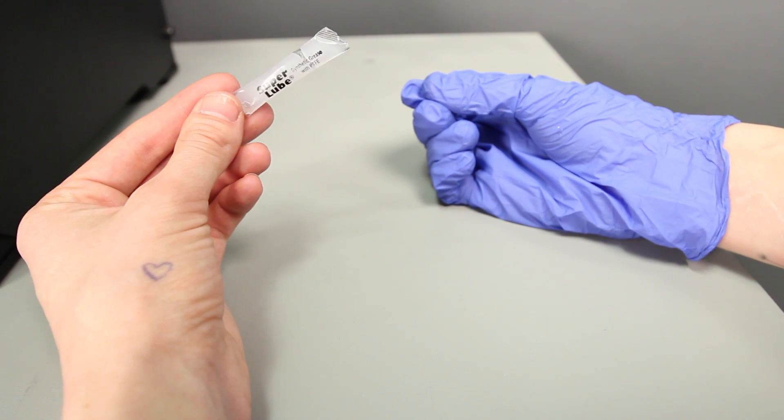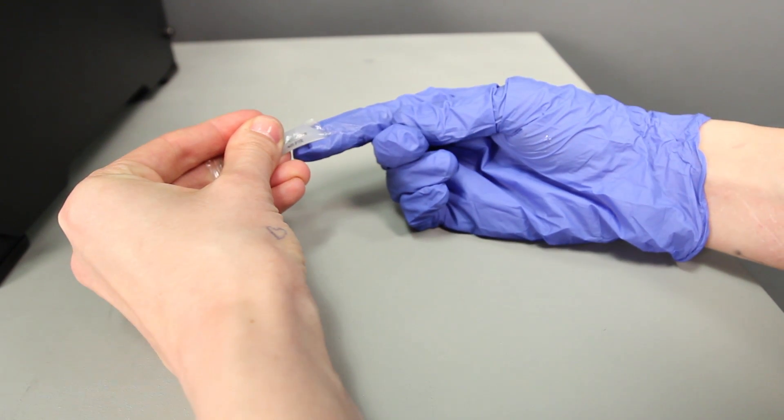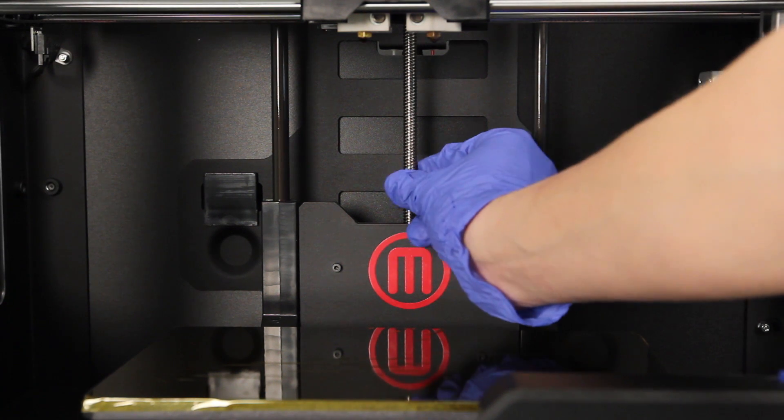After every 50 hours of printing we recommend lubricating the z-axis rod and the x-axis idler pulley on your MakerBot Replicator 2X. Take a very small amount of the PTFE based grease that came in your bag of accessories and use a gloved finger to work the grease into the threads.